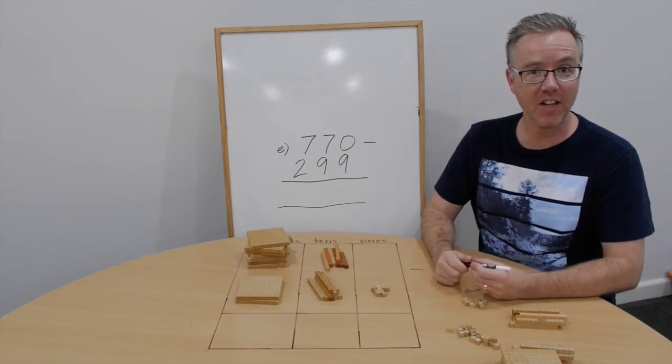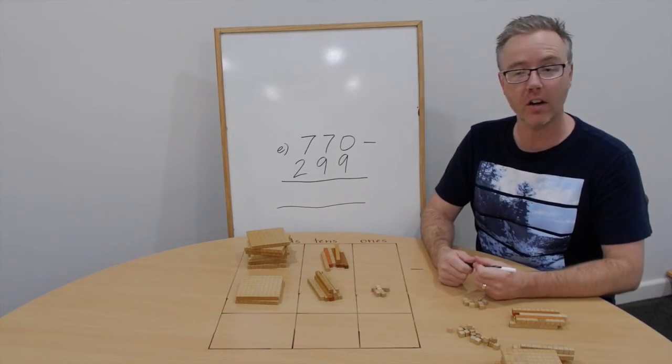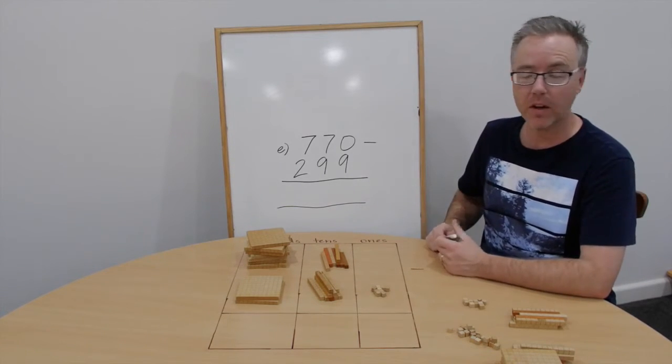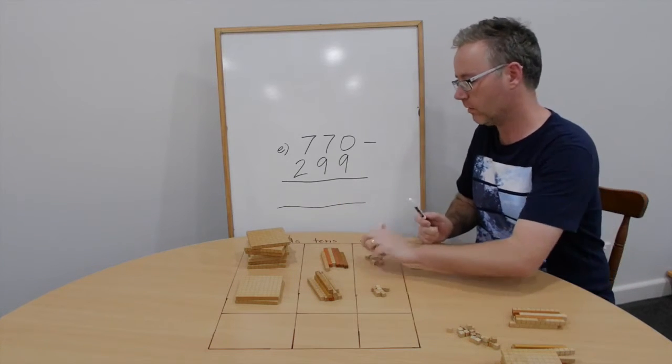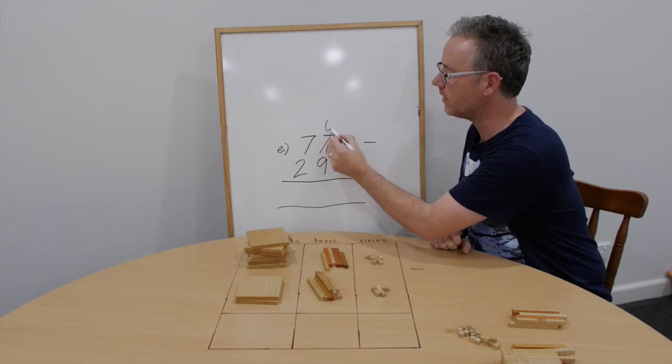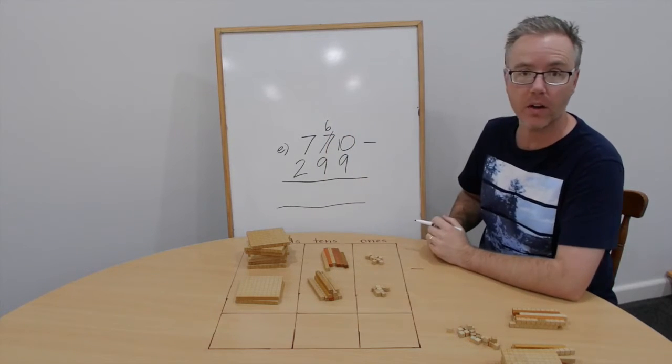Question E. 770 take away 299. 0 take away 9 we can't do. So let's trade a 10 for ten ones. We now have 6 tens, 10 ones. 10 take away 9 is 1.